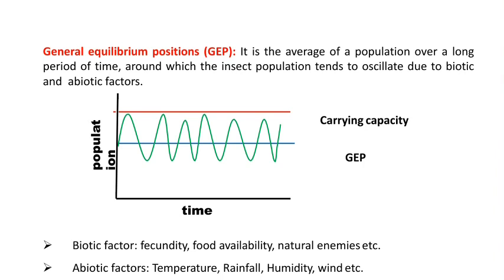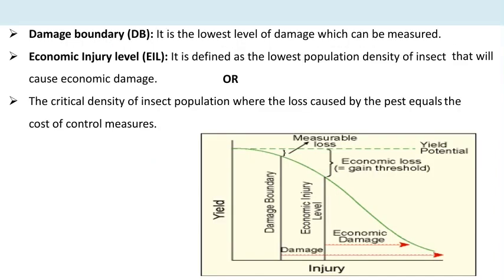The first concept is GEP — General Equilibrium Position. It is the average population over a long period of time around which the insect population tends to oscillate due to biotic and abiotic factors. The next concept is the damage boundary: it is the lowest level of damage which can be measured — the pest causes damage to a number of plant parts, and that measurable level is the damage boundary.